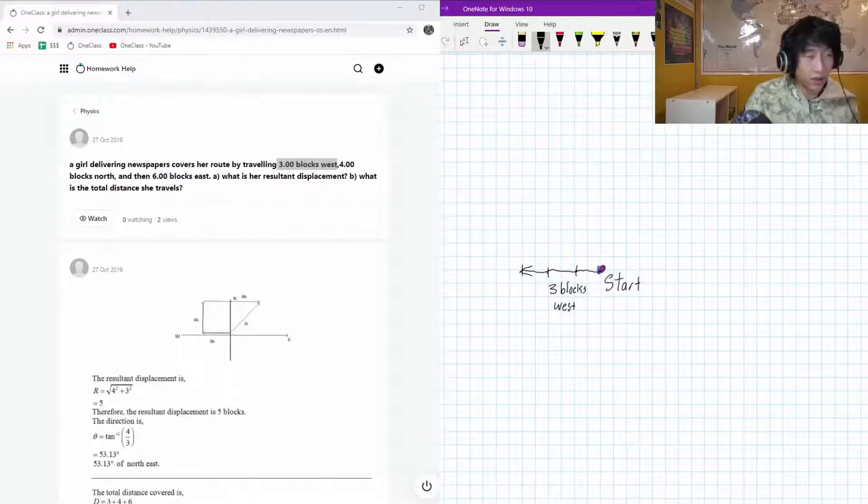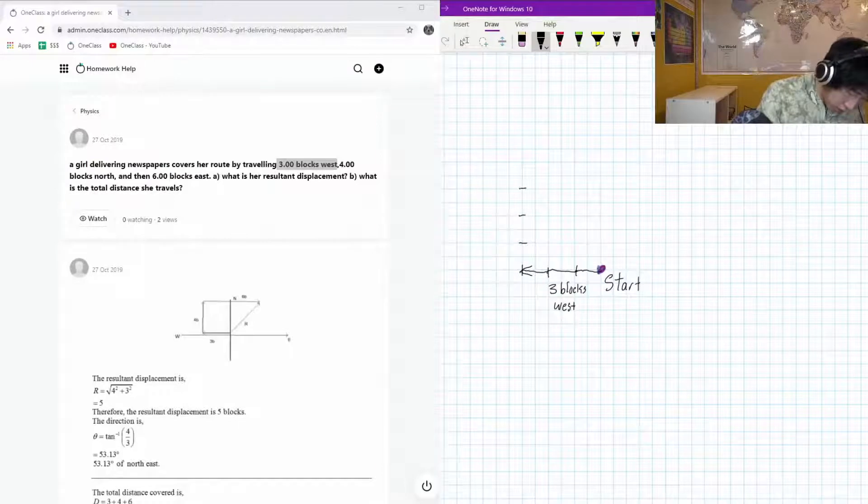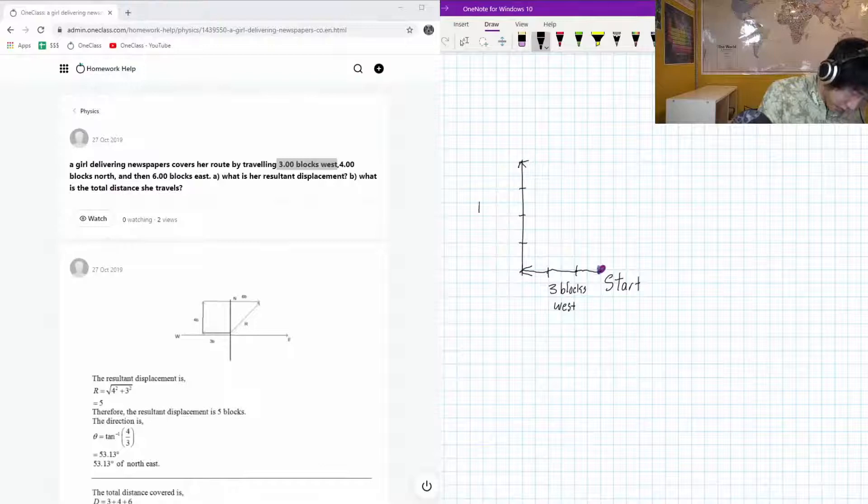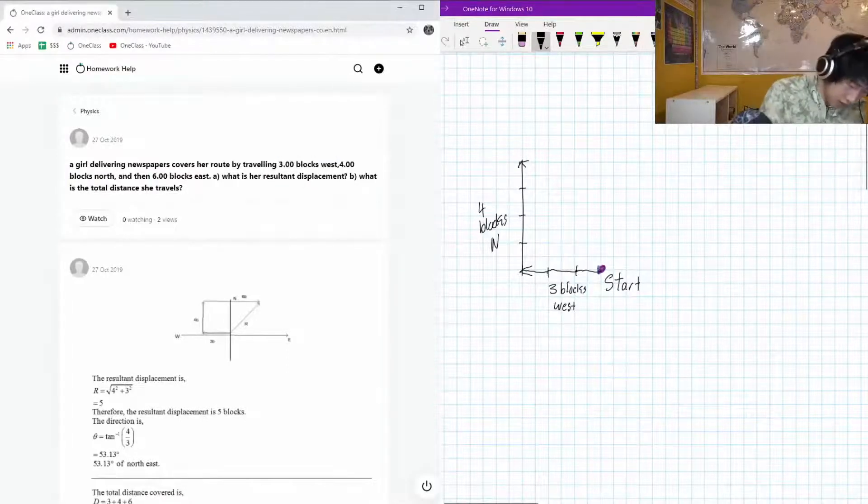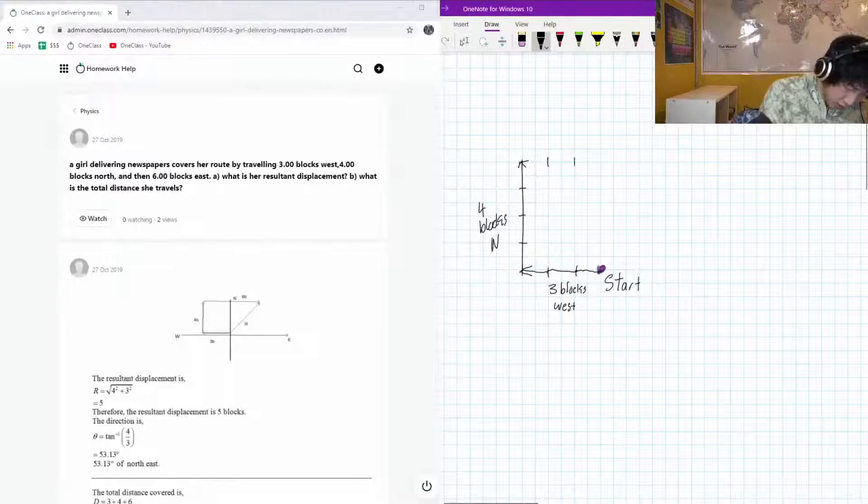Okay, the next step in our journey, four blocks north, three, four, four blocks north, and our next step is six blocks east. One, two, three, four, five, six blocks east.